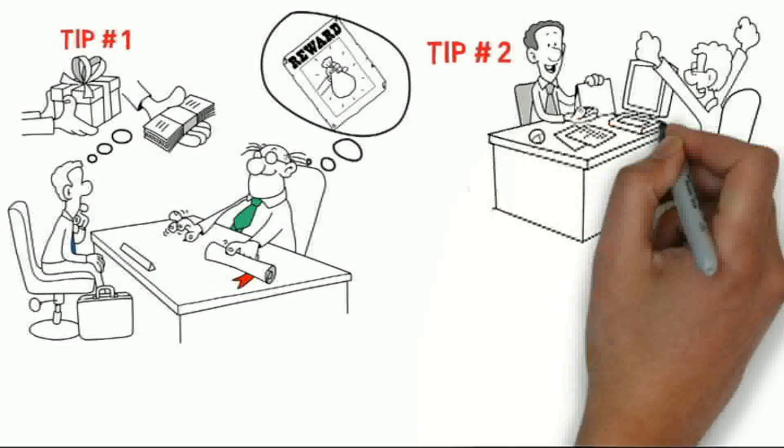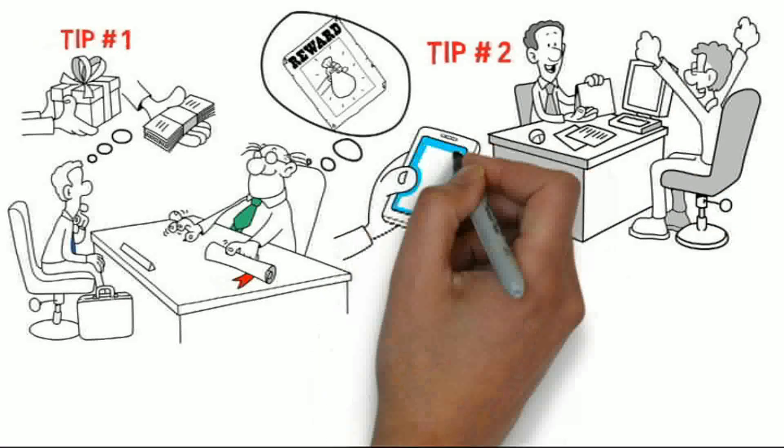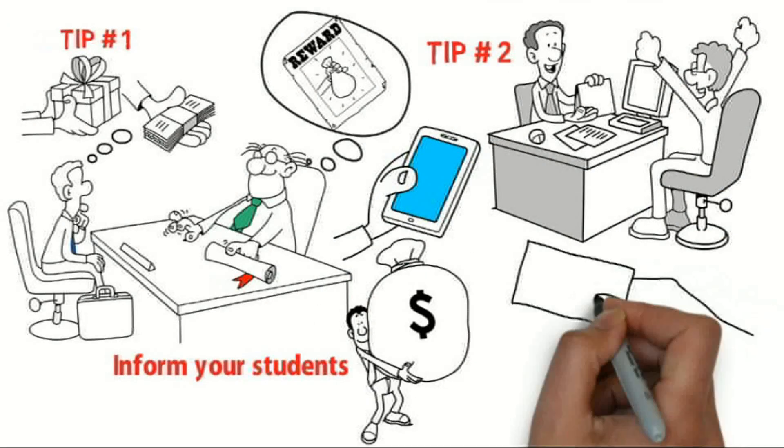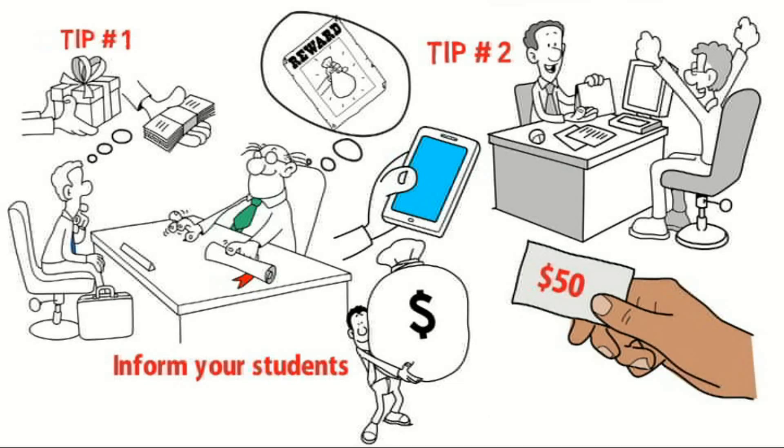Tip number two, choose a mystery buyer in your community from the phone book. Inform your students that if they sell to this mystery person, they will receive a $50 gift card or other prize.